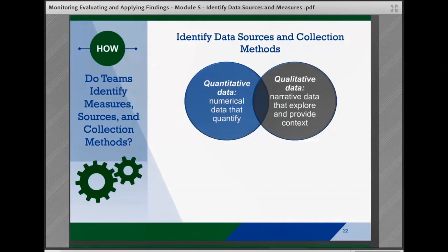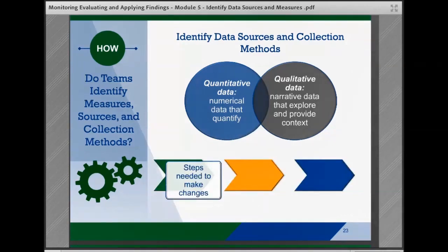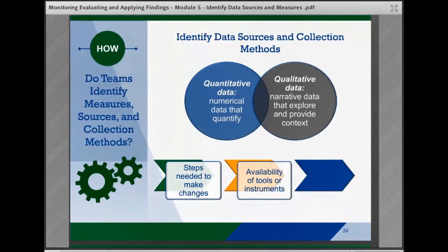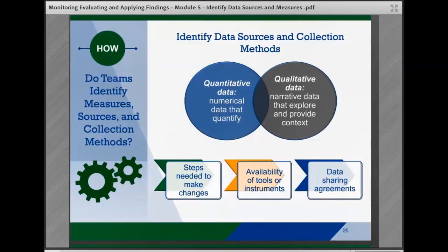Both quantitative and qualitative data can be collected through various methods, such as a review of records or administrative data, observation, surveys, interviews, focus groups, tests, or assessment tools. While thinking about data collection, teams should also consider the steps they need to take to make any changes to documentation and reporting, the availability of developed tools or instruments to collect the data that are validated or have been used by others with similar interventions, or potential data sharing with other agencies or partners who serve the target population and the agreements that would be needed to put in place. Teams will want to factor in the time it takes to incorporate these considerations, and it helps to begin these steps early in the implementation process.